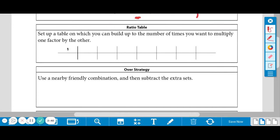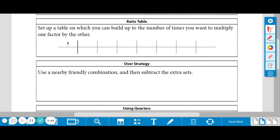The next one we're going to look at is ratio tables. So go ahead and make a little subtitle, ratio table, and sketch one out real fast. Okay, to look like the one on the screen. We're going to set up a table on which you build up one of the numbers, build up to the number of times you want to multiply one factor by the other. So basically what we're doing is finding multiples.